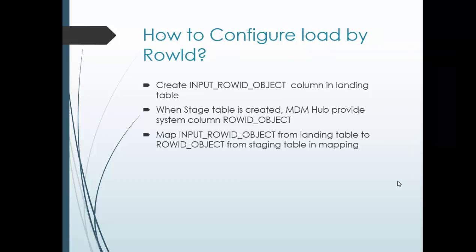How can we configure Load by Row ID? It is very simple and straightforward. The row ID object is available in two main tables: the staging table and the base object table. Of course it also exists in the cross-reference and history tables, but the main ones are the staging table and the base object table. The row ID object column is present in both the staging and the base object table, so we need to map that column.